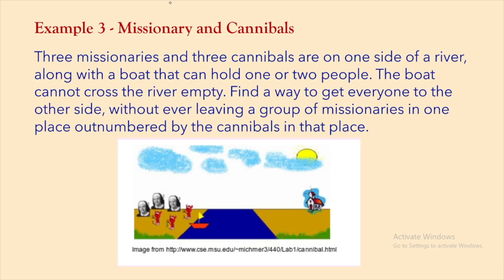The third example is the missionaries and cannibals problem. Three missionaries and three cannibals are on the left side of a river along with a boat that can hold 1 or 2 people. The boat cannot cross empty. Find a way to get everyone to the other side without ever leaving missionaries outnumbered by cannibals, otherwise the cannibals would eat the missionaries.